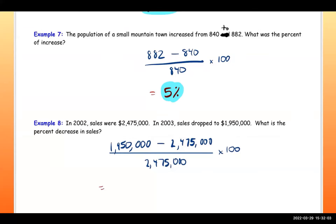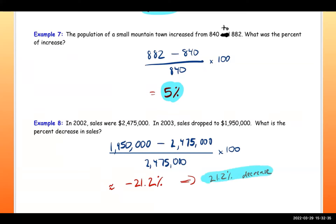I'm getting negative 21.21212 — a repeating decimal — so approximately negative 21.2 percent. A negative means that the percent decreased and a positive means that the percent increased.